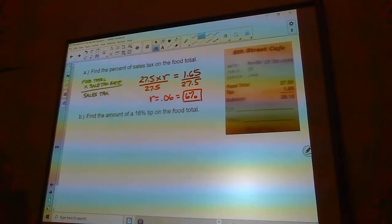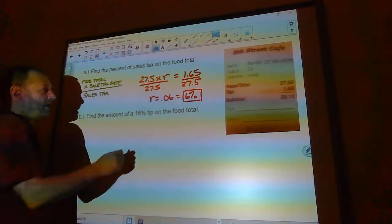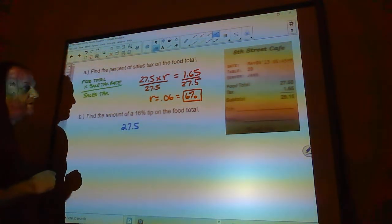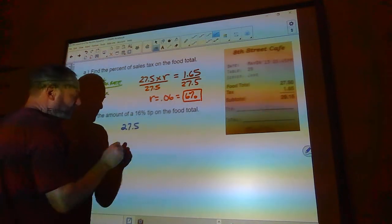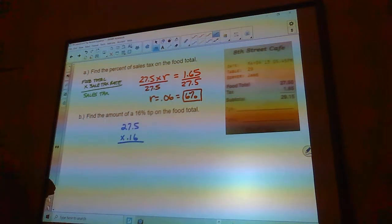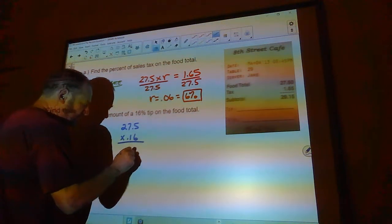Find the amount of a 16% tip on the food total. Okay, so on this one, the food total is $27.50. And then I'm going to multiply that by 16% because I need a tip. So 27.5 times 0.16. So the tip is going to be $4.40.